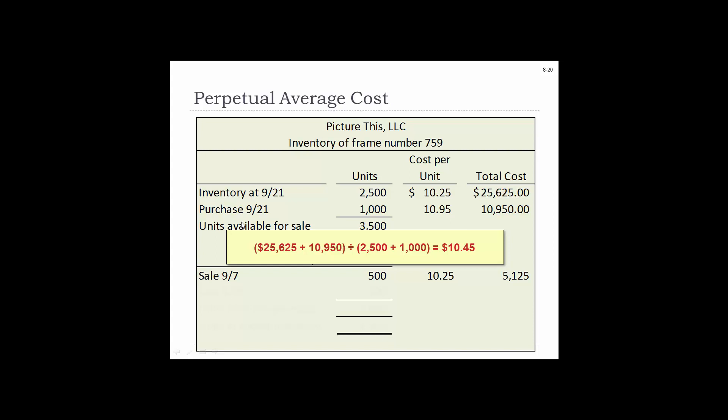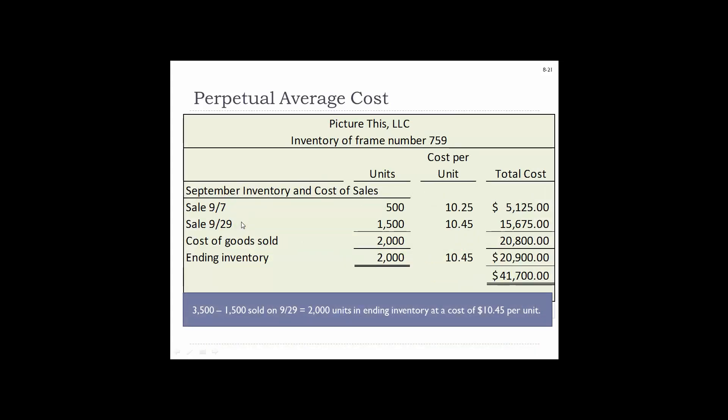Then they purchased 1,000 units at $10.95. At this point you have 3,500 units for sale. Adding the costs together gives a new perpetual average cost of $10.45. So we sell 1,500 units at $10.45. Total cost of goods sold is $10,800. Ending inventory is 2,000 units at the average cost, and these two numbers should reconcile to our total cost.